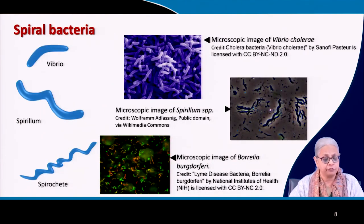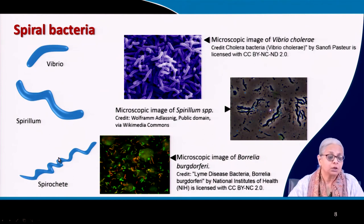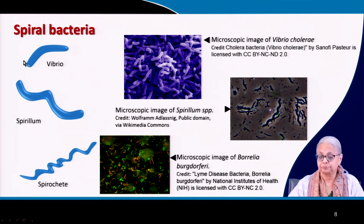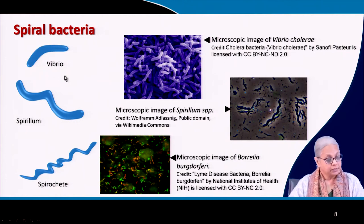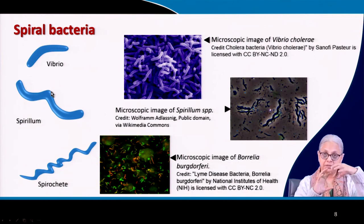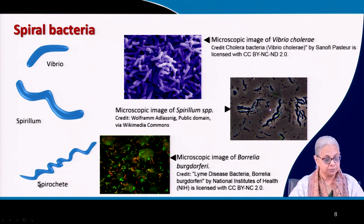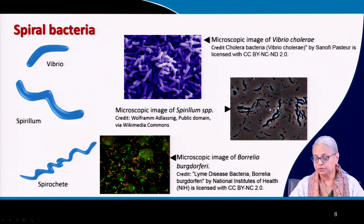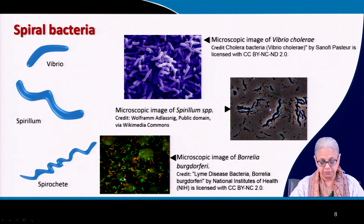Then we have more interesting forms. Vibrio — famous for Vibrio cholerae, which causes cholera — is comma-shaped. Here we have Vibrio cholerae in SEM. Then there is Spiralum, where the entire body of the bacteria is slightly helix-shaped. You can see Spiralum with its wavy body and Spirochete, which is slightly helical in nature. Here is another image of helical organism Borrelia species.